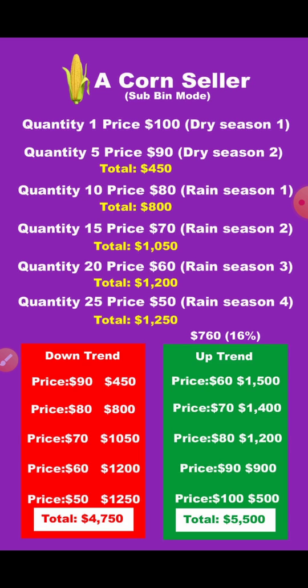In the second dry season, rain has started falling but not regularly, so some people have started to grow corn but it's still very scarce. The price came down to $90 and the seller was able to buy five quantities. This is exactly how the bot works — buying low as the price is going down. The next season, when rain started to fall more, more people could start to harvest corn. The man was able to buy at $80, so as the price goes down the man is buying more quantity.